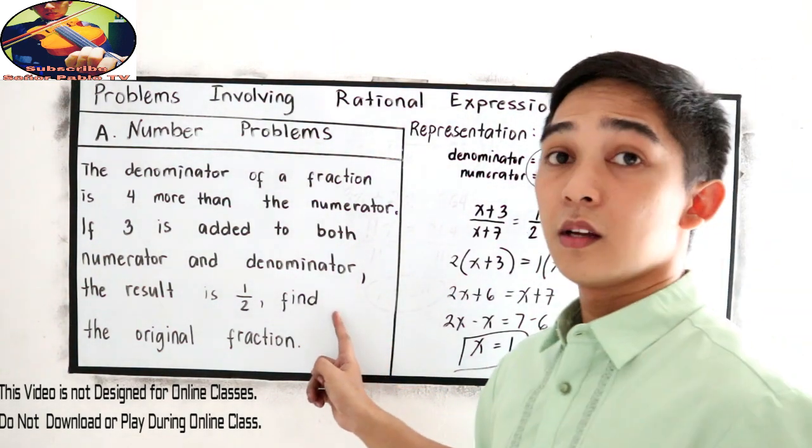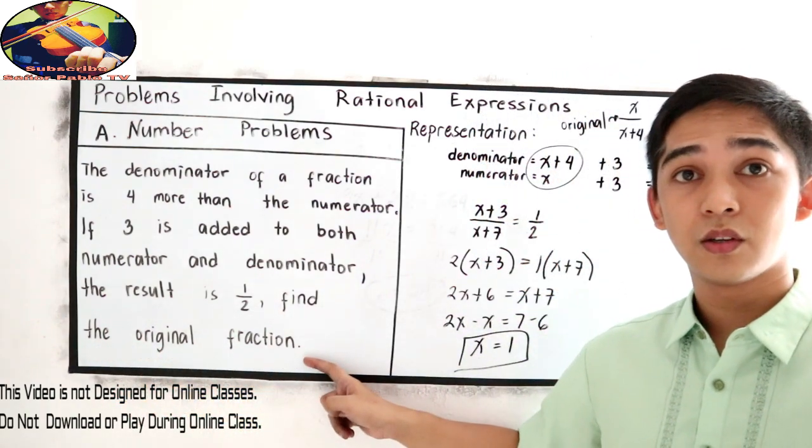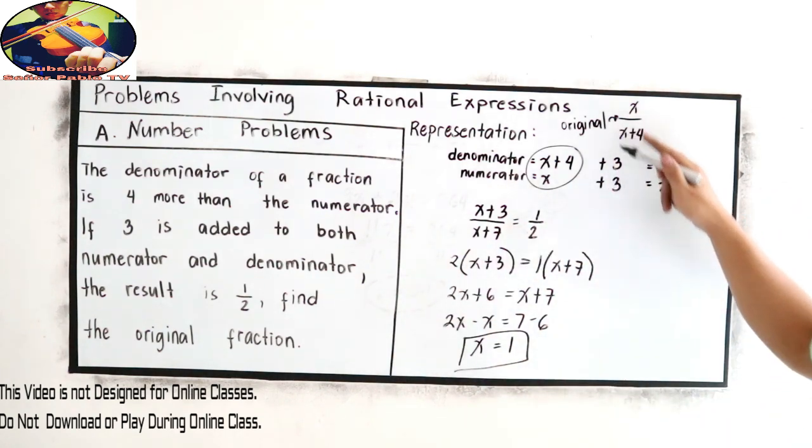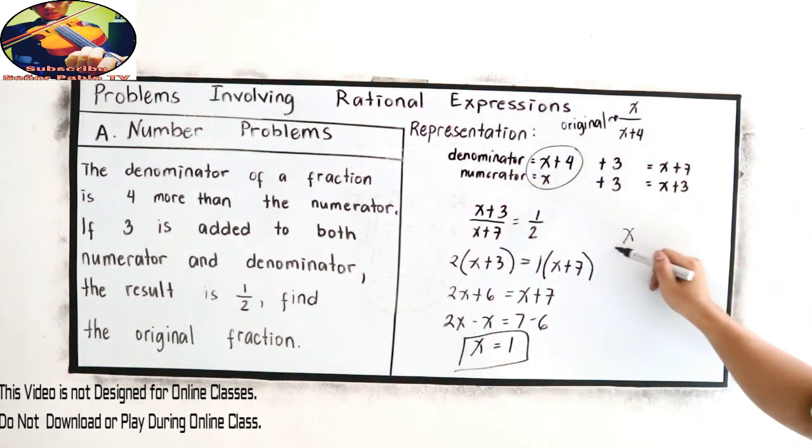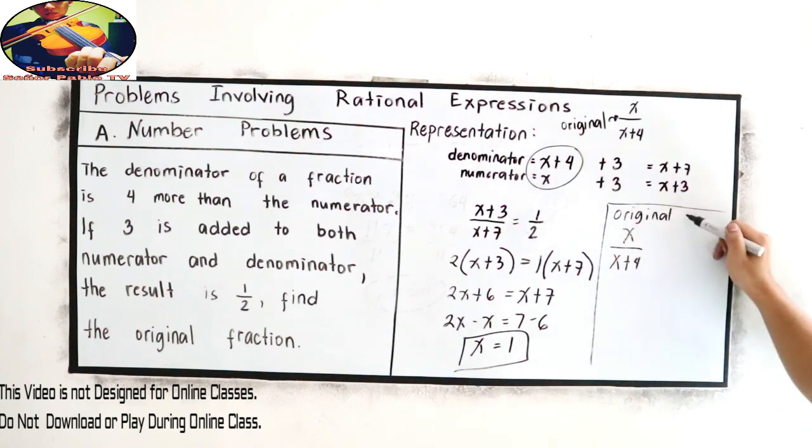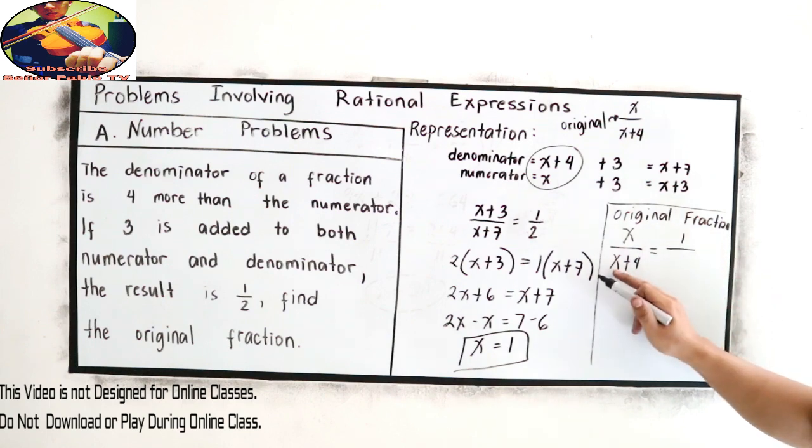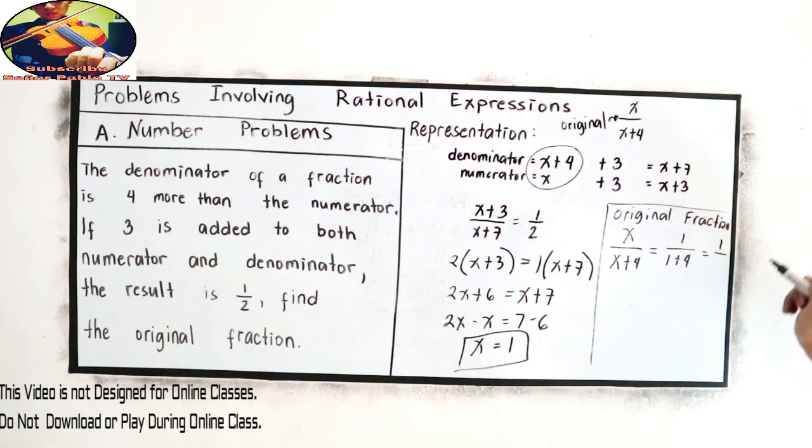Now your task is find the original fraction. So our original fraction is x over x plus four. This is the original fraction. So we're just going to substitute the value of x. Our x is one over one plus four. So this will become one over five.